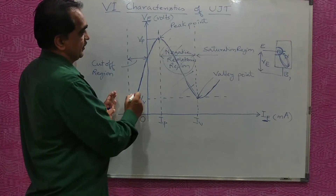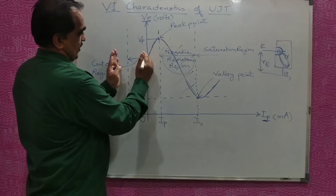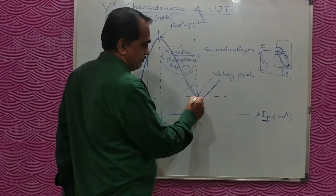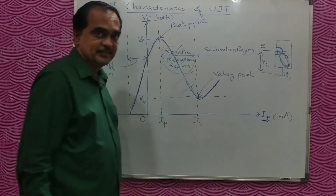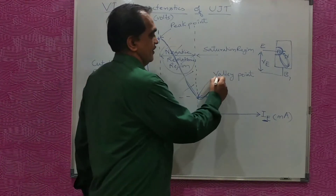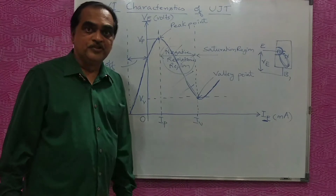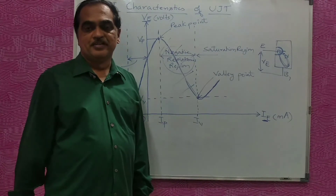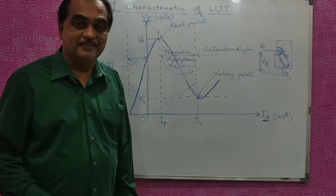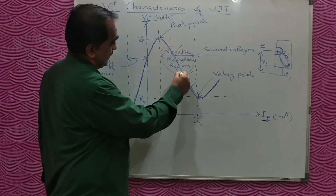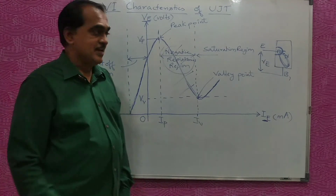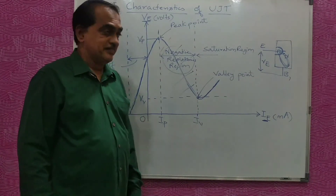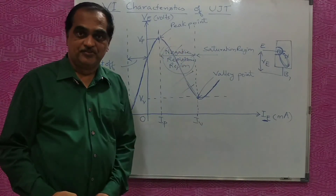The area before the peak point — from where you started with the reverse leakage current up to the peak point — is called the cutoff region. After the valley point, the region is called the saturation region. This is how the VI characteristics of UJT are plotted. The most important thing is that we take current on the x-axis and voltage on the y-axis, so we can show the dipping of voltage when current is increasing. This inverse relation according to Ohm's law gives the negative resistance region, which is an important characteristic of the UJT.